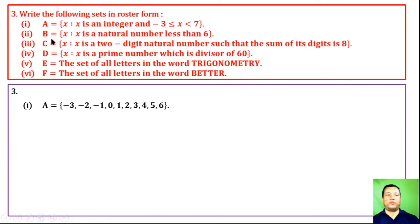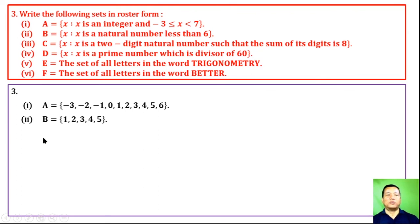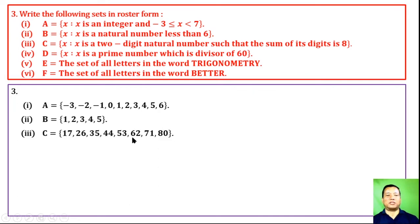B = {x : x is a natural number less than 6} = {1, 2, 3, 4, 5}. C = {x : x is a 2-digit natural number such that the sum of its digits is 8} = {17, 26, 35, 44, 53, 62}.